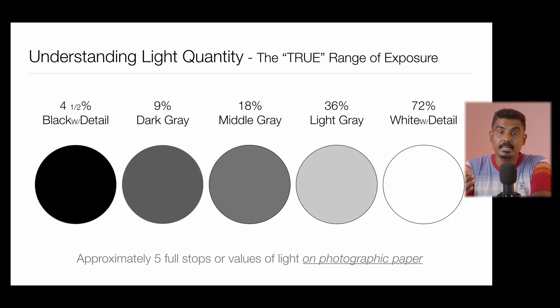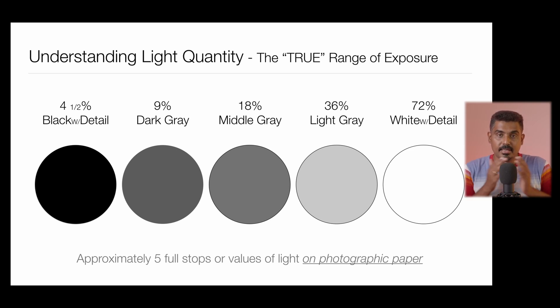To tell you about middle gray — it's 50% gray. If you're talking about 18%, we'll explain middle gray. The camera uses this as a reference. In middle gray, we correct the exposure. If you have pure black, you'll lose details. If you have pure white, you'll also lose details.